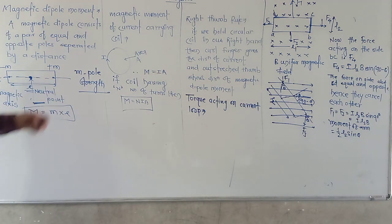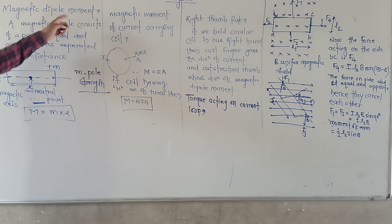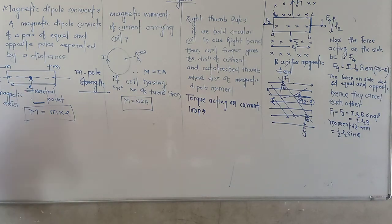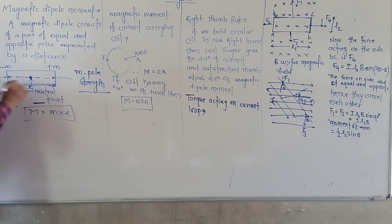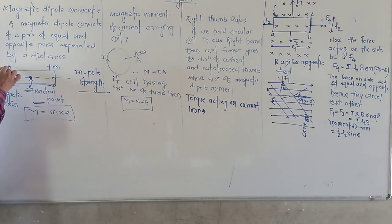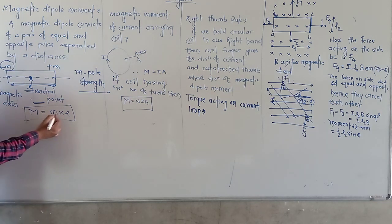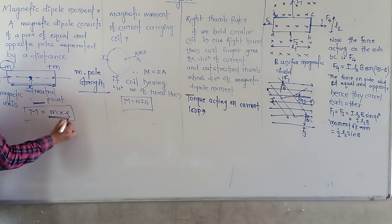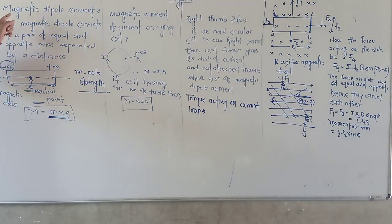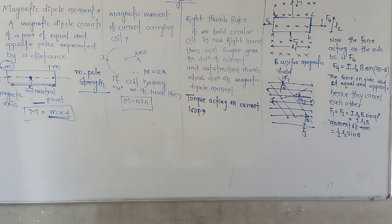How do you find the magnetic dipole moment of a magnet? The distance between the two poles is separated by a small distance, denoted by small l. The product of the magnitude of pole strength and that distance gives the magnetic dipole moment M of the magnet.